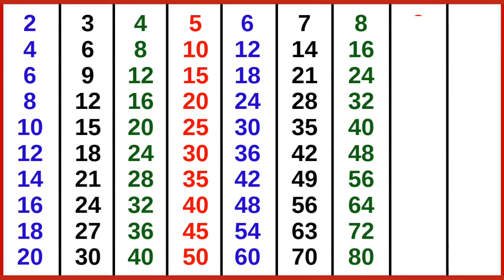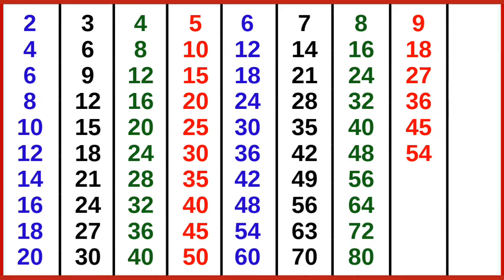9 ones are 9, 9 twos are 18, 9 threes are 27, 9 fours are 36, 9 fives are 45, 9 sixes are 54, 9 sevens are 63, 9 eights are 72, 9 nines are 81, 9 tens are 90.